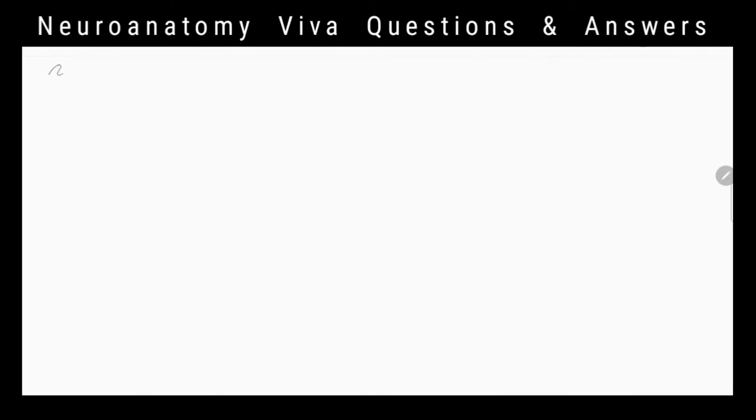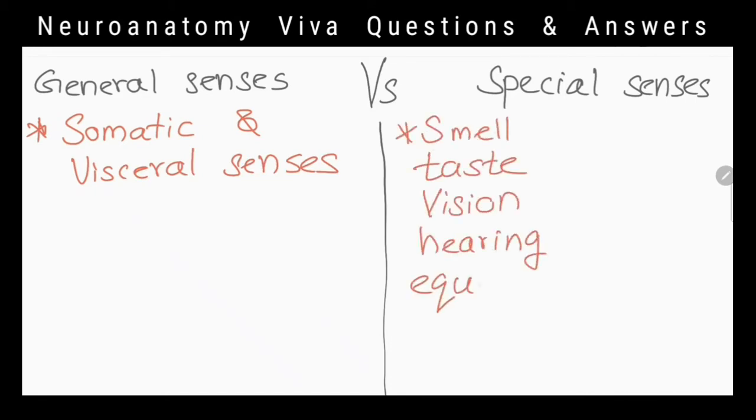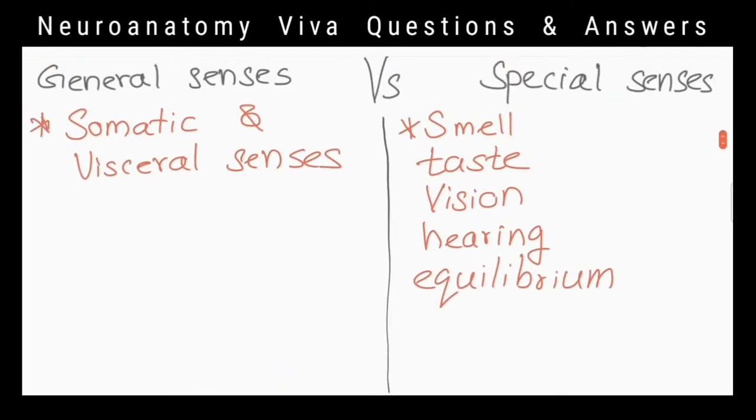What is the difference between general senses and special senses? General senses include senses that are not specific such as somatic sensations and visceral sensations. Special senses include smell, taste,